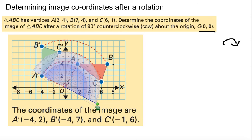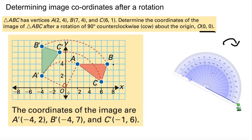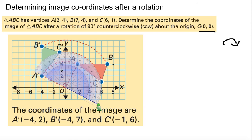You measure everything 90 degrees. It's right on the 90 — give or take a couple degrees — but you can be more precise when using paper and your protractors. You do this for every point: the same thing for C, measure 90; and B, from there to there, is 90 degrees. Your new coordinates: A prime (negative 4, 2), B (negative 4, 7), and C prime (negative 1, 6). You take your protractor, measure everything off 90 degrees — that's how you do it.